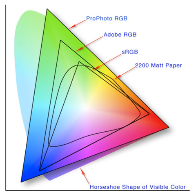YIQ was formerly used in NTSC television broadcasts for historical reasons. This system stores a luma value roughly analogous to, and sometimes incorrectly identified as, luminance, along with two chroma values as approximate representations of the relative amounts of blue and red in the color. It is similar to the YUV scheme used in most video capture systems and in PAL, except that the YIQ color space is rotated 33 degrees with respect to the YUV color space and the color axes are swapped. The YDBDR scheme used by SECAM television is rotated in another way.